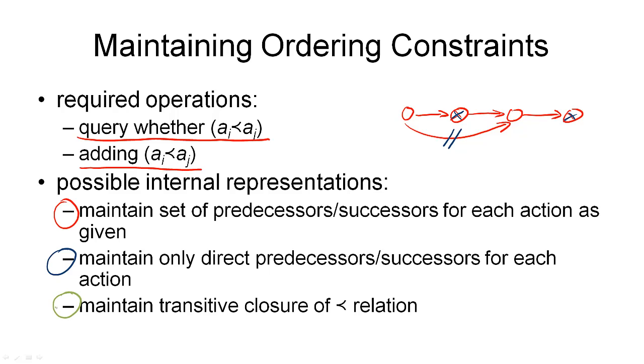The final option would be to maintain the transitive closure explicitly. So in this case, every time we assert a new ordering, we have to compute the transitive closure with respect to all other actions in our plan and maintain every link explicitly. That means, when we query, we're very fast. But the problem is now that the assertion, the adding of an ordering, becomes a relatively slow operation.